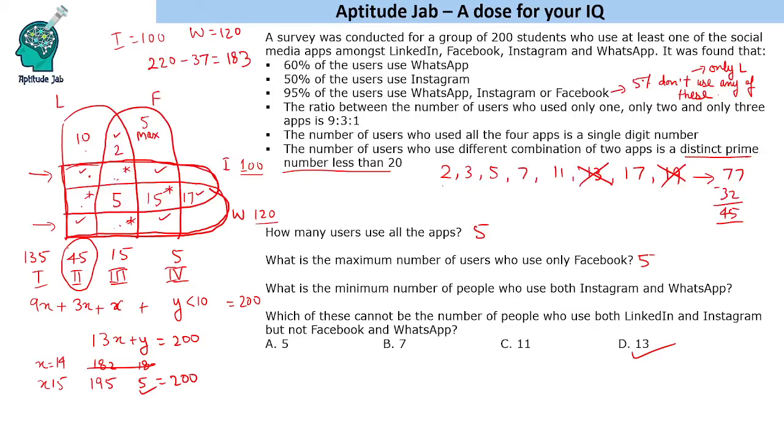Now the next question is what is the minimum number of people who use both Instagram and WhatsApp. So what we will do in this case is we have to find the minimum number of people in this part. If there is a minimum number of people here, we should have maximum number of people outside. Maximum in these two regions. Again we need to have a minimum here. We need to have minimum here. So if we have minimum here, we will have maximum in these two parts. If we have maximum in these two parts, this should be minimum. So we will put it as zero.